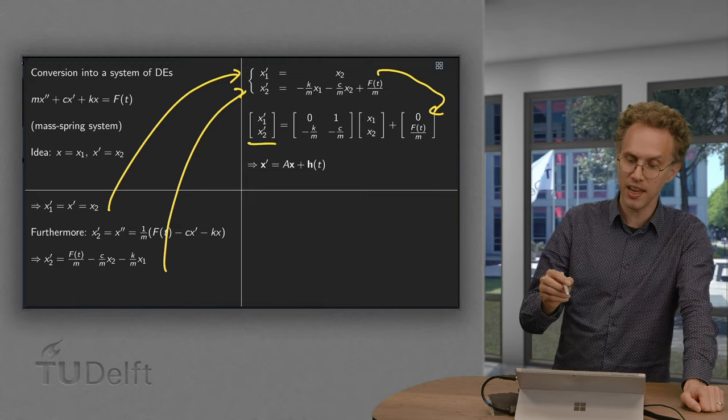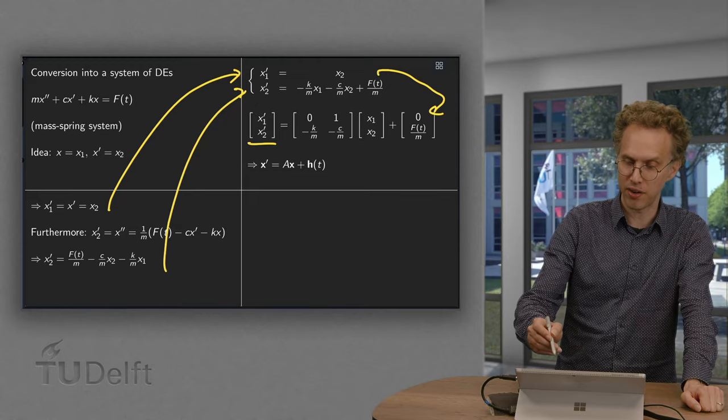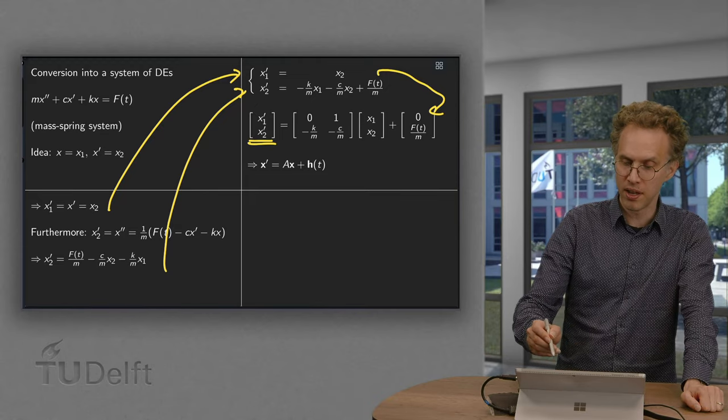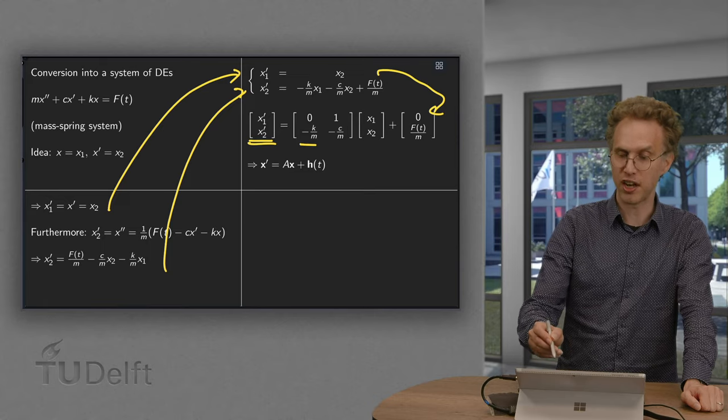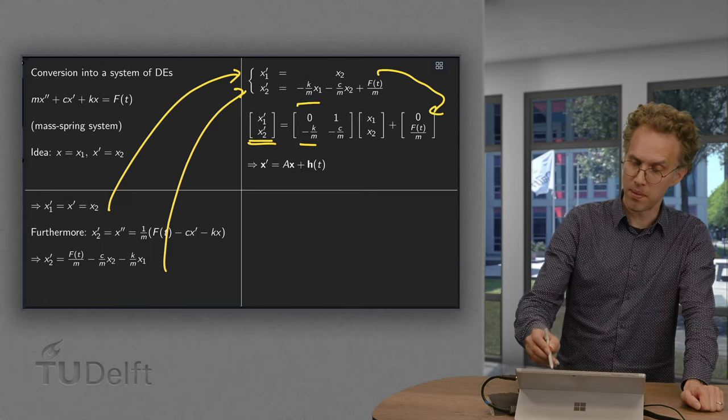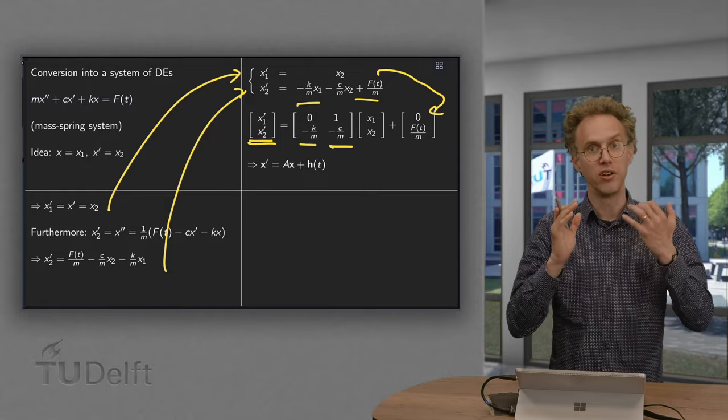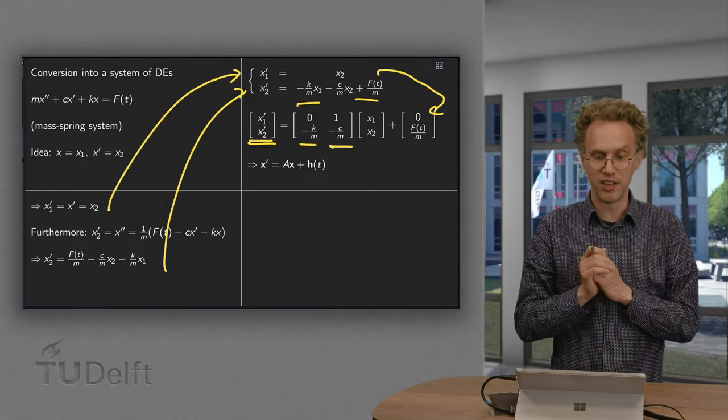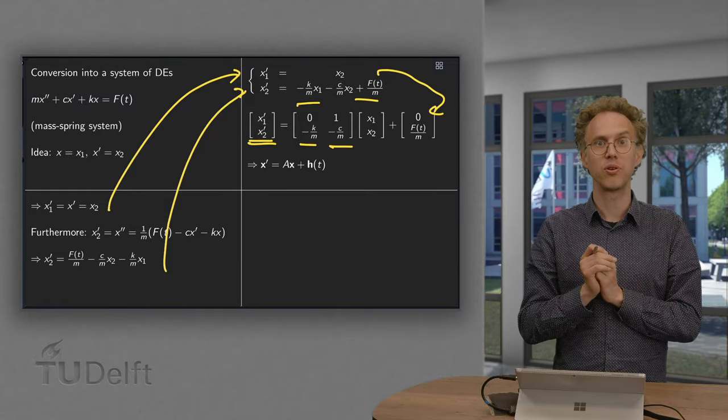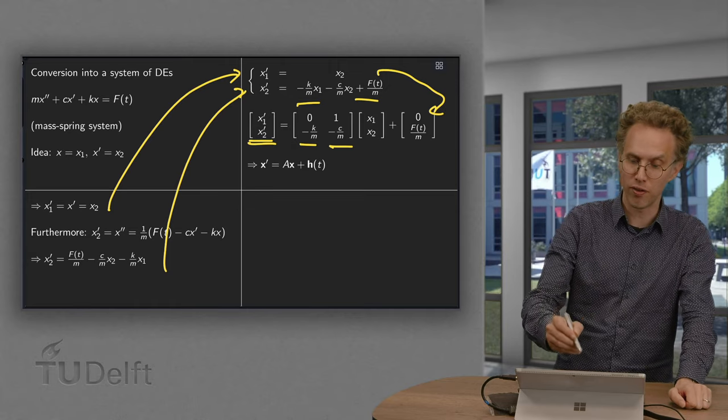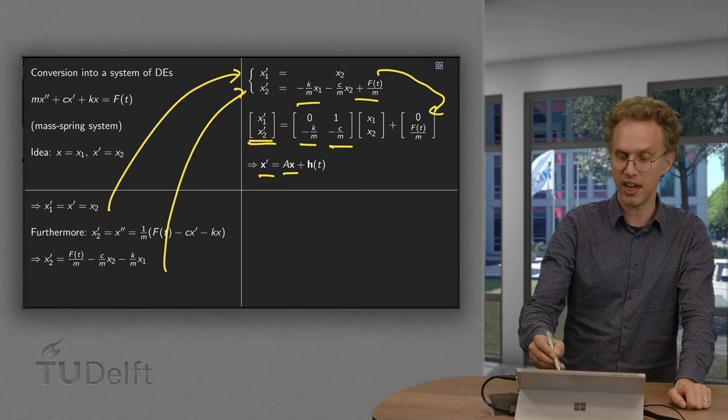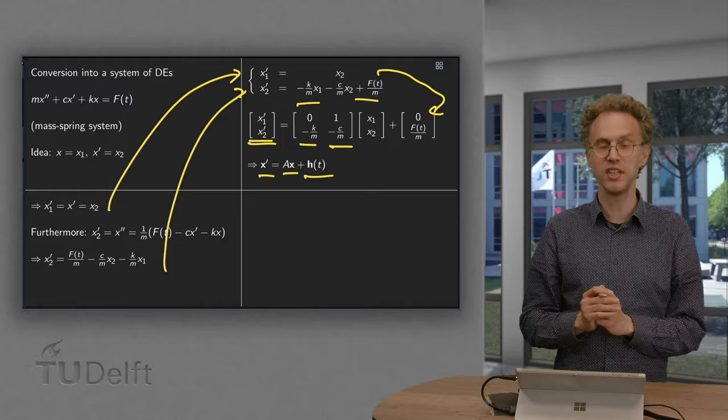So, the first row is a bit silly. And the second row, there we get x2 prime equals minus k over m x1, minus c over m x2 plus some constant term. So, now we have seen that we have rewritten our one second order equation into a system of differential equations of the form x prime equals A times x plus h of t.